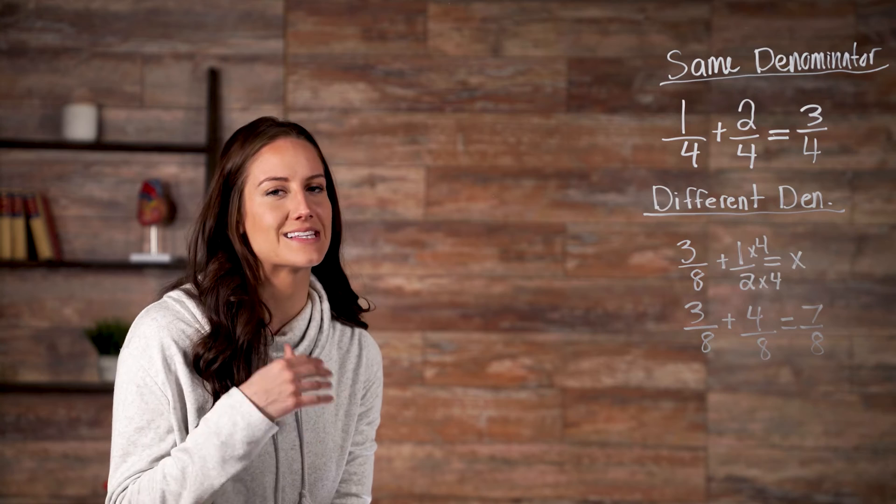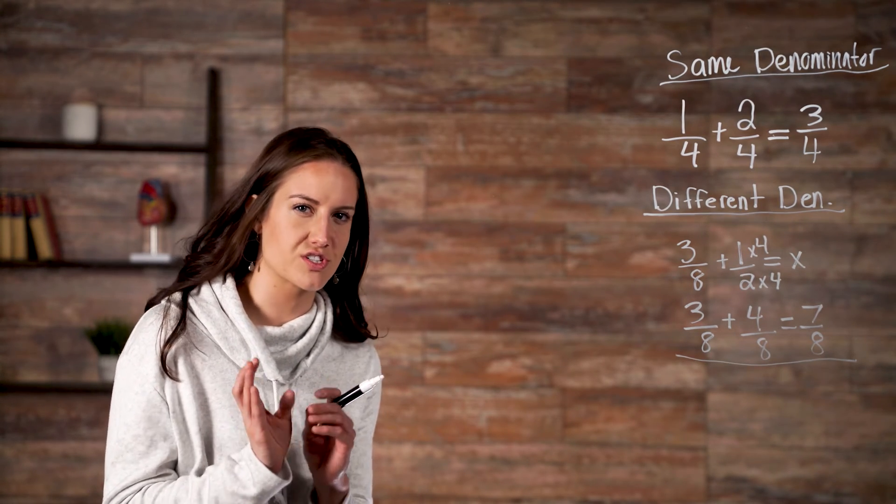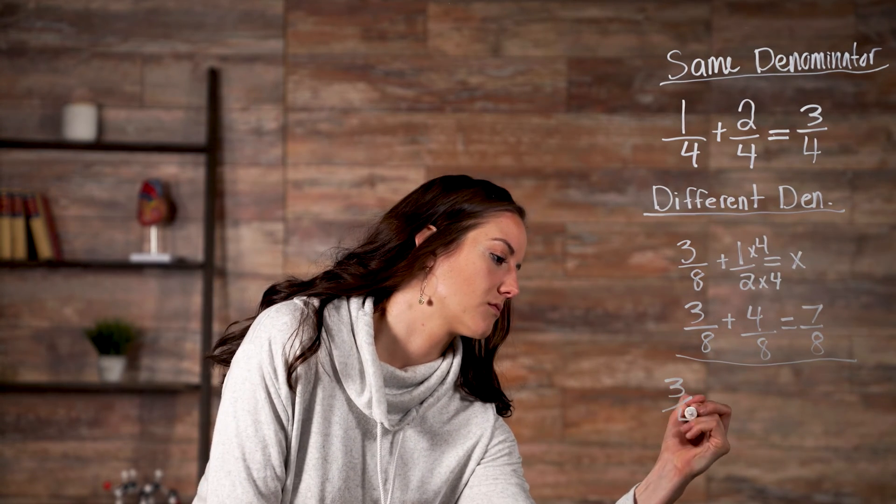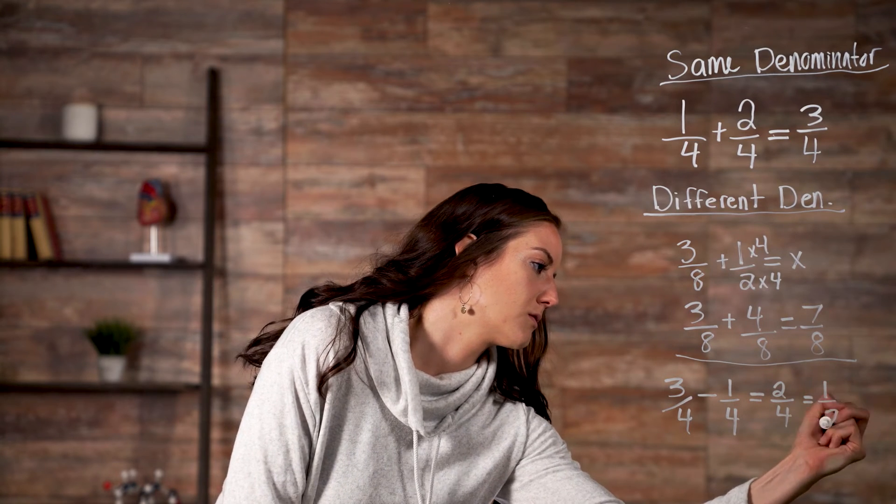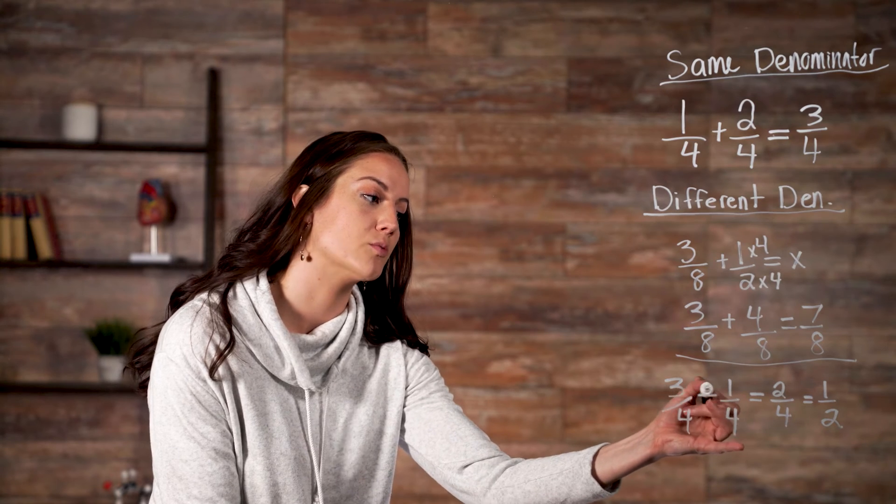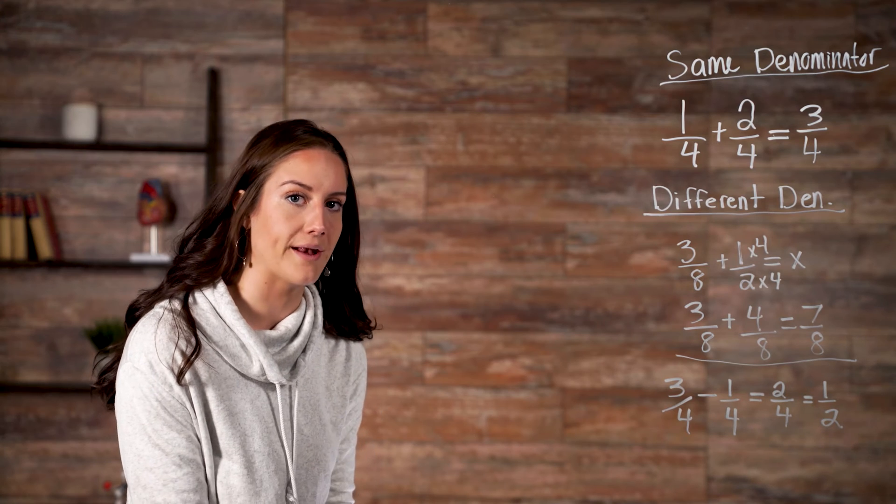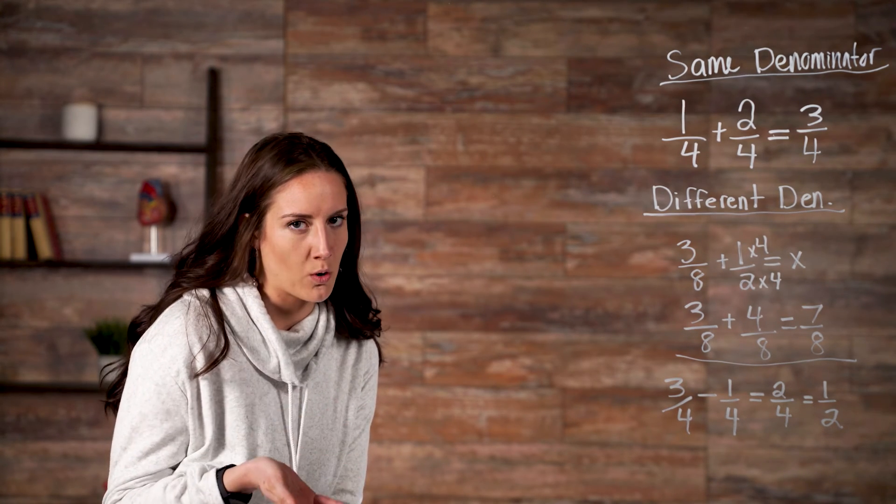Subtraction works the same way. If you're subtracting fractions with the same denominator, you can just subtract the top numbers, like in this example. So, in this example, all we had to do was subtract our top numerators here, which gave us two-fourths, which simplifies to one-half. Simplifying numbers just makes them easier to work with.